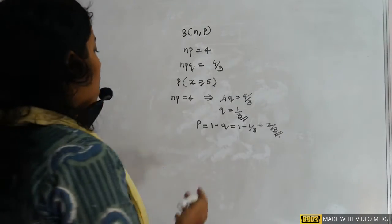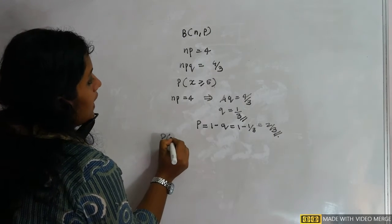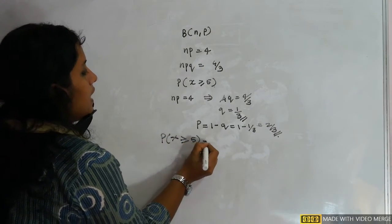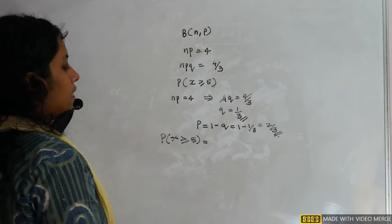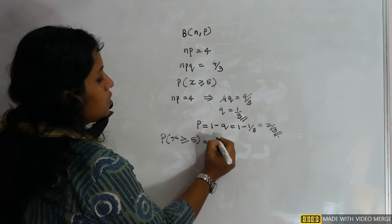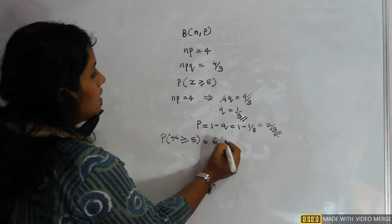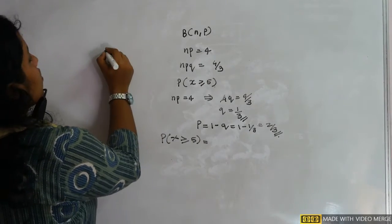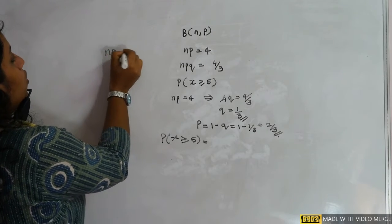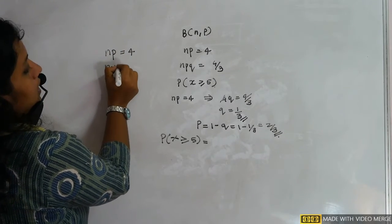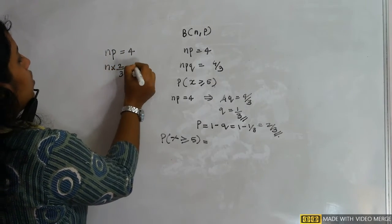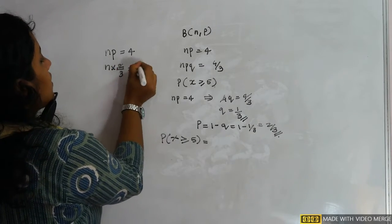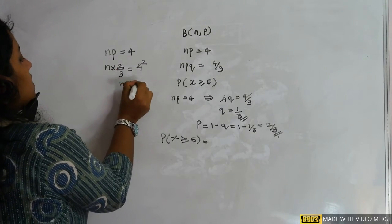P(X ≥ 5) requires knowing n. Since np = 4 and p = 2/3, we get n × (2/3) = 4, so n = 6. Now expand the binomial for X = 5 and X = 6.